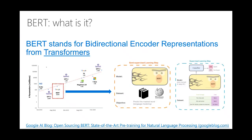BERT stands for Bidirectional Encoder Representations from Transformers. We'll be focusing on the BERT model from Google, which has 340 million parameters. If you want to read more about BERT, there is a link to the Google AI blog where you can read it straight from Google and read the paper.